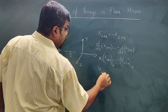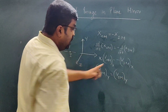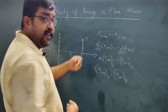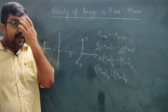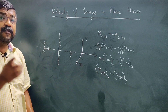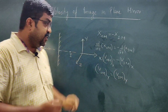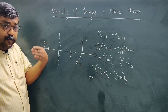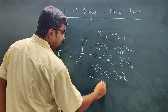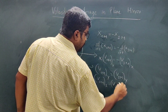So when the object moves parallel to the mirror, the direction does not change. Therefore: velocity of object with respect to mirror along y-axis equals velocity of image with respect to mirror along y-axis — with no minus sign, because the direction is the same. Similarly, along the z-axis, velocity of the object with respect to the mirror equals velocity of the image with respect to the mirror.